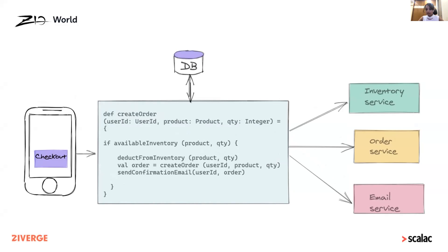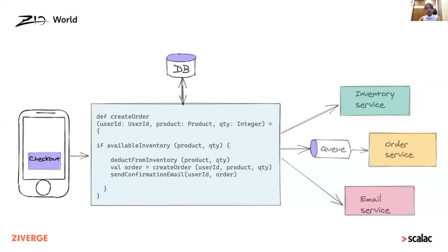But even then, things can still go wrong. What happens if the state update operation itself fails? Then there is inconsistency between the actual state of the system and what is in the DB — that can be quite a messy situation. There are also other kinds of failures, like API call failures that happen pretty often. We try to work around that by introducing a queue where we can keep retrying the failed request periodically, but that is just one more system to maintain, and we can see how the complexity is quickly rising.